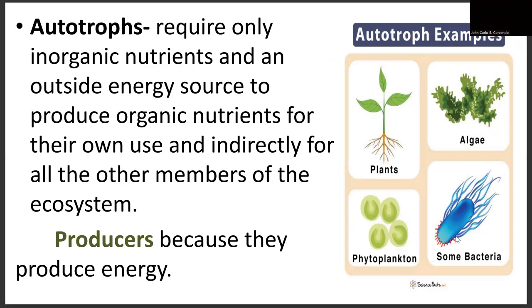Autotrophs require only inorganic nutrients and an outside energy source to produce organic nutrients for their own use and indirectly for all other members of the ecosystem. Autotrophs are also known as producers because they produce their own food and are capable of producing energy. Examples include plants, algae, phytoplankton under the ocean, and cyanobacteria, which can also produce their own food as a source of energy.